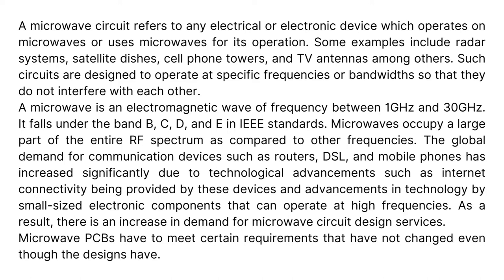A microwave is an electromagnetic wave of frequency between 1 GHz and 30 GHz. It falls under bands B, C, D, and E in IEEE standards. Microwaves occupy a large part of the entire RF spectrum as compared to other frequencies.